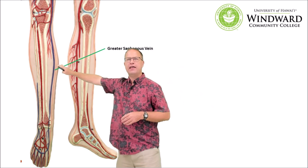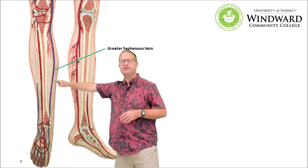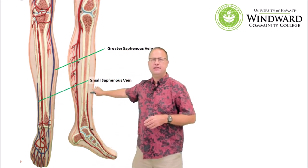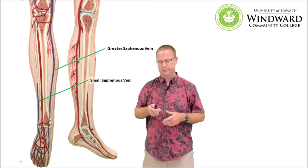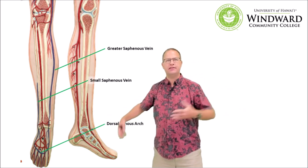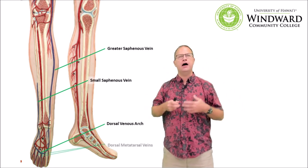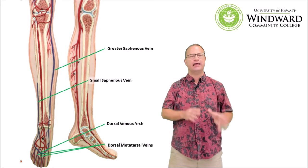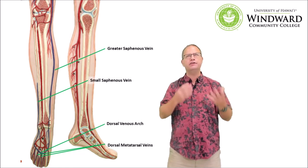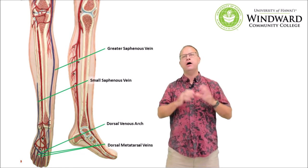Last, let's master the veins of the lower leg — fortunately there are not many on this model. On the inside of the calf we have the great saphenous vein, a superficial vein on the inside of the leg. On the other side is the small saphenous vein, a smaller external vein. Just as we saw with the arteries in the foot, we have a dorsal venous arch where blood vessels converge and give rise to vessels of the metatarsals and eventually the phalanges. There you have it — the circulatory system covered in under 15 minutes. If you're having problems, go back and review this video and work with the models in your virtual laboratory.